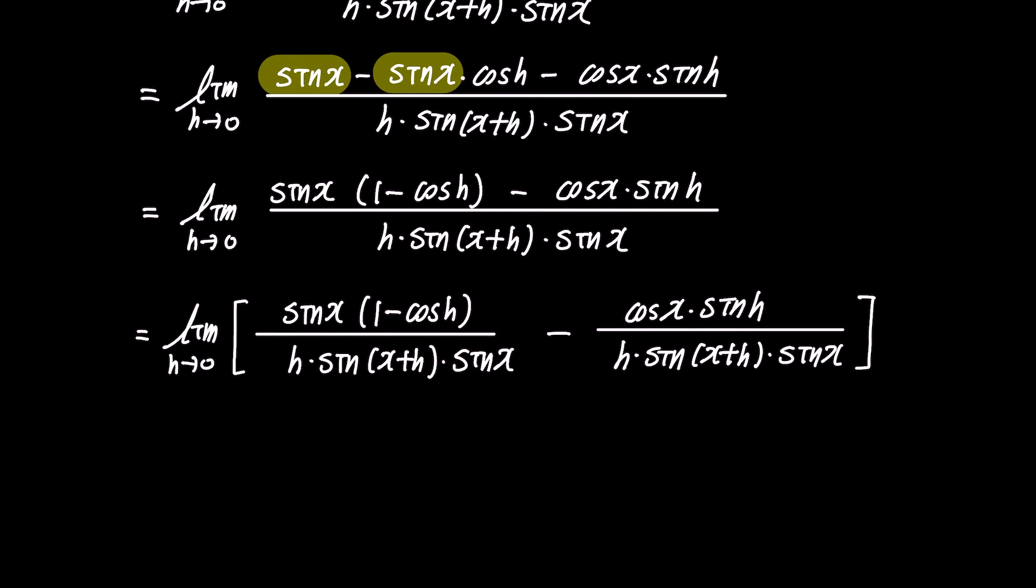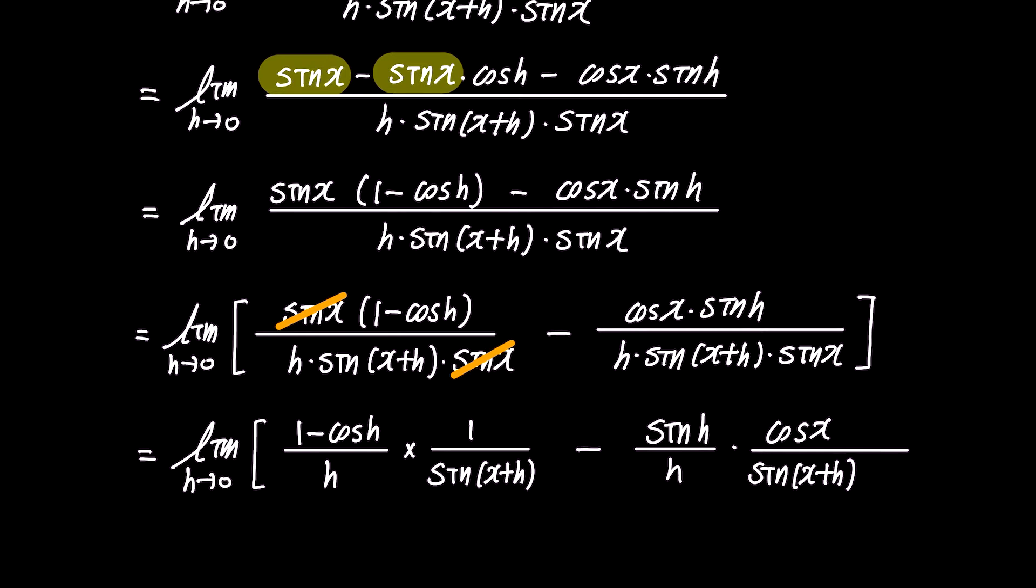In the first fraction, we can cancel out the sin x terms in the numerator and denominator. Rearranging the expression slightly, we get, as h approaches 0, the limit of 1 minus cos h over h times 1 over sin x plus h, minus sin h over h times cos x over sin x plus h times sin x.